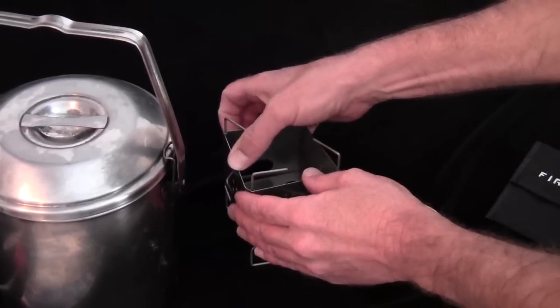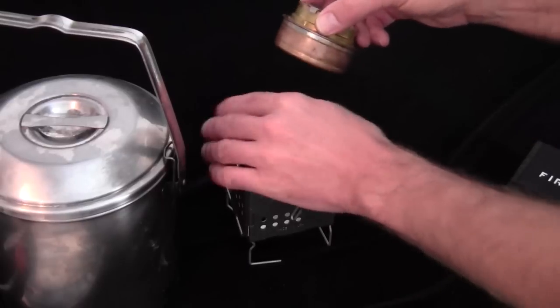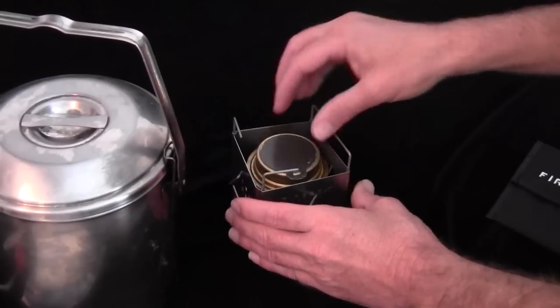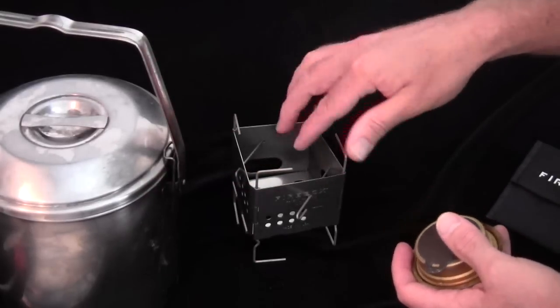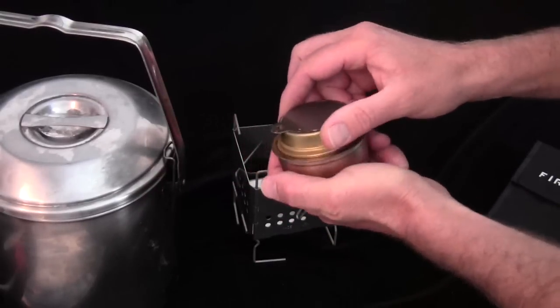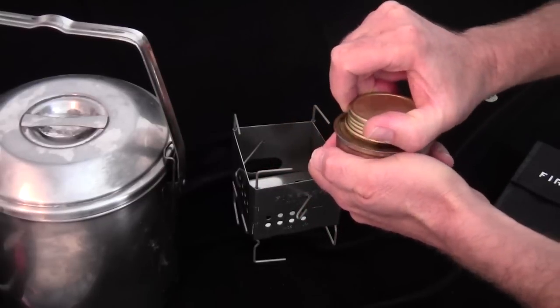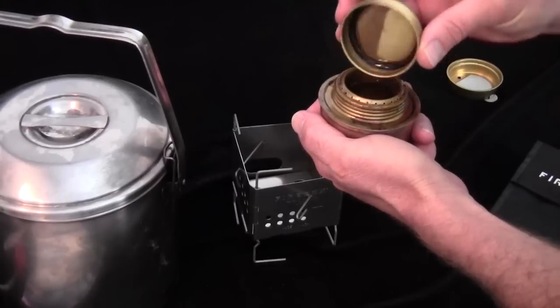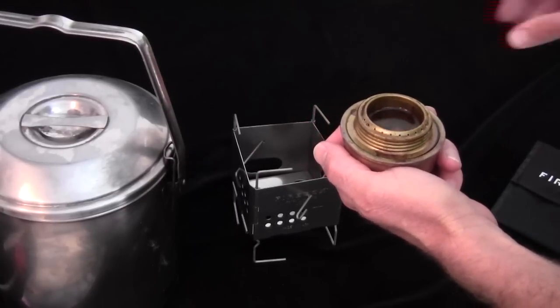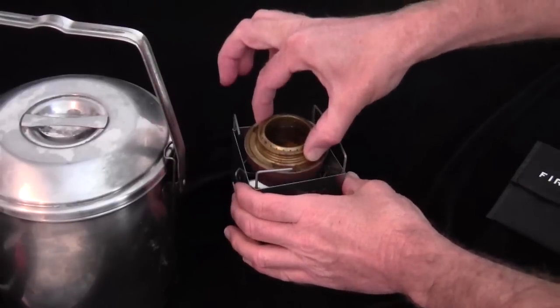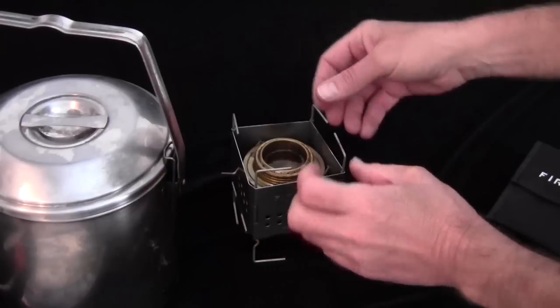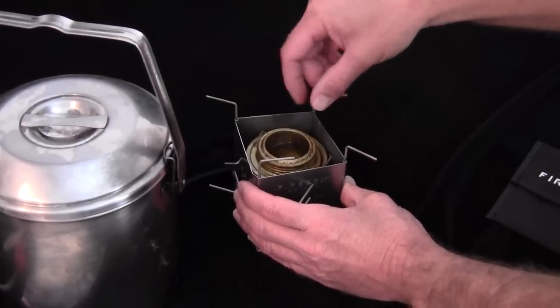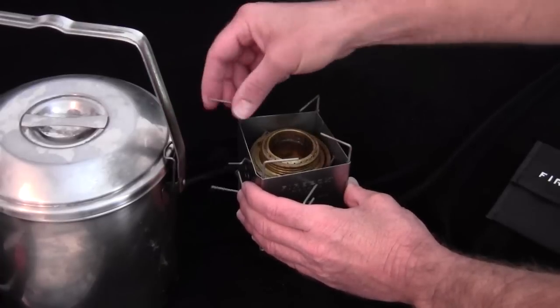This position for the Trangia puts it at the one inch height from the bottom of your pot to the jets on the Trangia, that sweet spot one inch that Hiram Cook recommends. I'm gonna go ahead and put this alcohol stove in its position. Now I'm gonna aim these legs outward. They can be aimed inward for a small cup or a small pot.